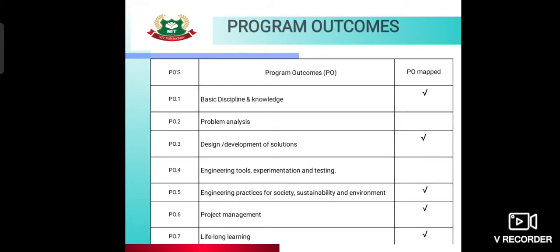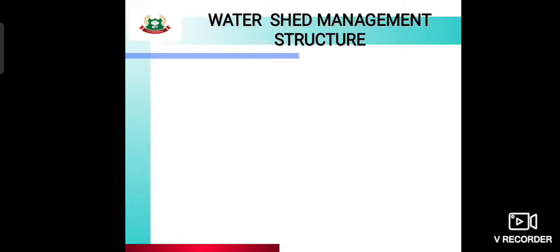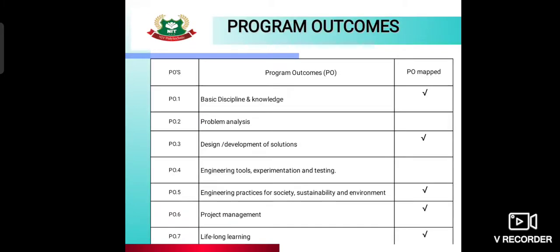There are several Program Outcomes mapped with this unit and practical: PO1 — basic discipline and knowledge; PO3 — design development of solutions; PO5 — engineering practices for society and sustainability of environment; PO6 — project management; and PO7 — lifelong learning.